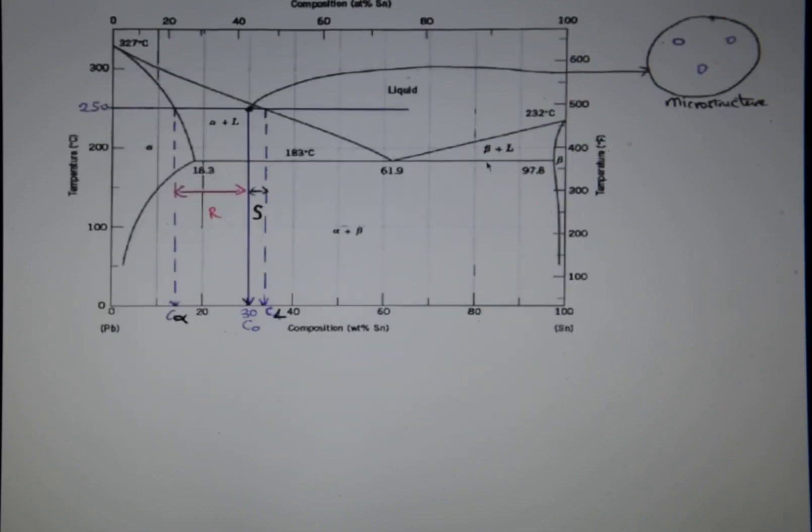So on here we have a phase diagram for the lead-tin system. The question says we have 30 weight percent of tin. So that's represented here. And 250 degrees Celsius. So what you do first is you need to draw your tie line which is this horizontal line here.